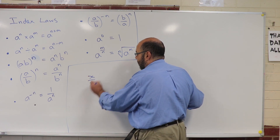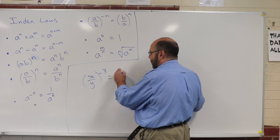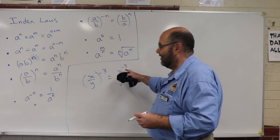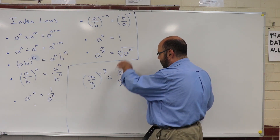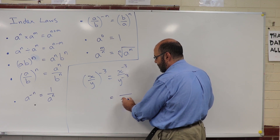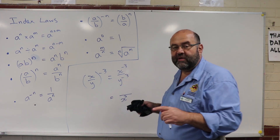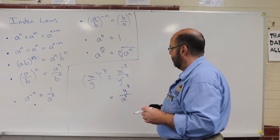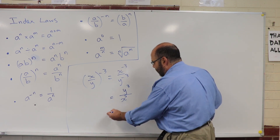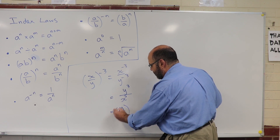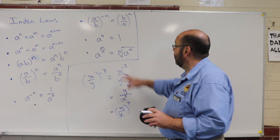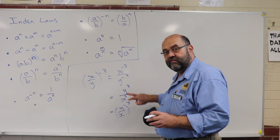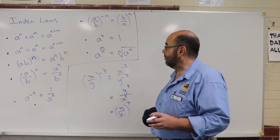So (x over y) to the power of negative 3 — well that's x to the negative 3 over y to the negative 3. Negative power means wrong side of the fraction line. That x cubed has to move — it goes down the bottom. Y has a negative power too, it's on the wrong side, so it moves to the top. So (x over y) to the negative 3 is the same as y over x cubed — they flip around and the power changes from negative to positive.